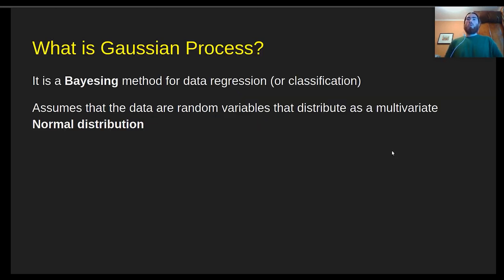What is Gaussian process? Gaussian process is a Bayesian method for data regression or classification. In general, people use Gaussian process for data regression. However, the concept behind regression and classification is the same.